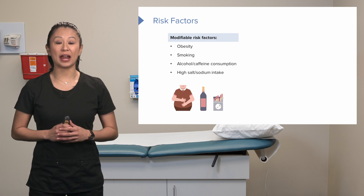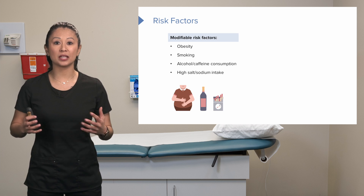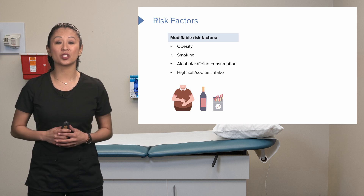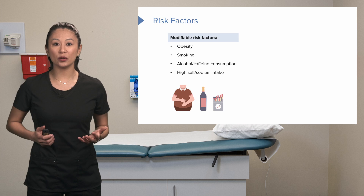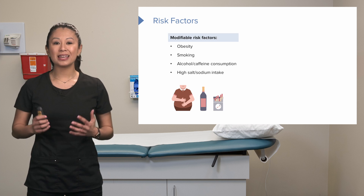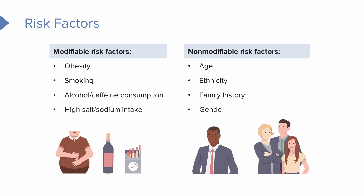Modifiable risk factors — such as obesity, smoking, alcohol consumption, caffeine intake, and high-salt diets — are things we can control to reduce our risk of hypertension. Non-modifiable risk factors are things the patient cannot change: aging, gender, ethnicity, and family history can all predispose someone to hypertension.